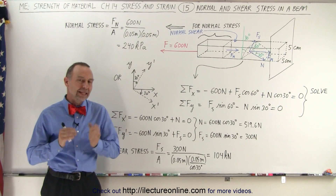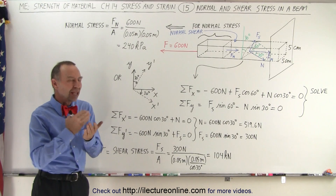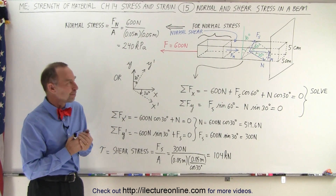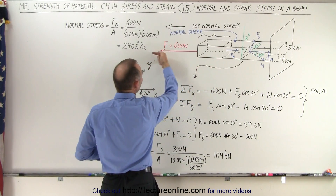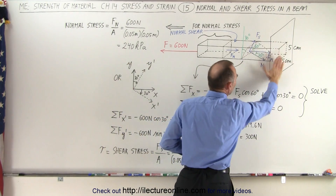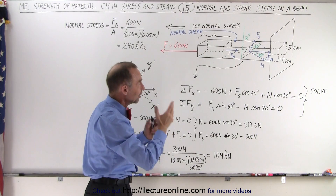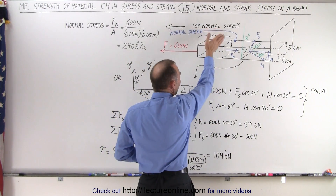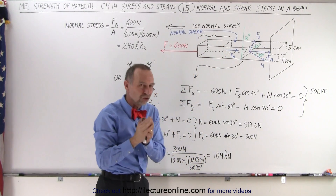Welcome to my lecture online. We're going to take a look at a beam and establish what the normal and shear stresses are on the beam. We're simply pulling with a force of 600 newtons in a negative x direction on this beam. This beam is attached to a wall. Notice that the cross-section of the beam is 5 centimeters by 5 centimeters, and we're going to imagine an imaginary cut in the beam — a location where we're going to establish the stress.